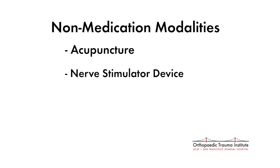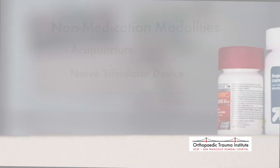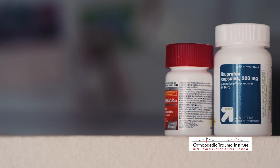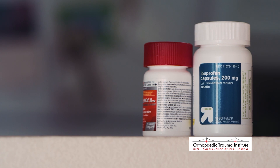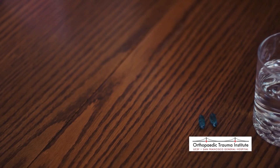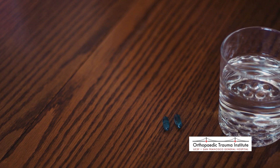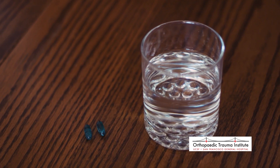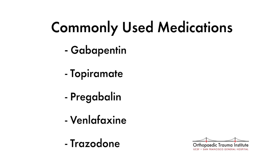Some patients may derive benefit from non-medication modalities such as acupuncture or nerve stimulator units for pain control. If needed, medications may be used for phantom limb pain. Treatments may range from medications taken by mouth or applied to the skin, including acetaminophen and ibuprofen. Interestingly, antidepressant and anti-seizure medications are frequently used for nerve pain, so your doctor may consider these for persistent pain. Commonly used medications include gabapentin, topiramate, pregabalin, venlafaxine, and trazodone.